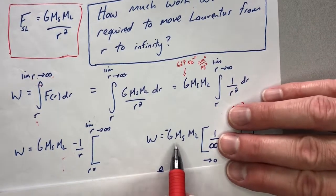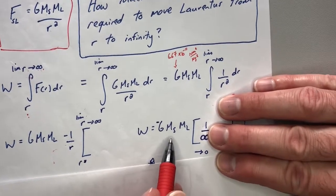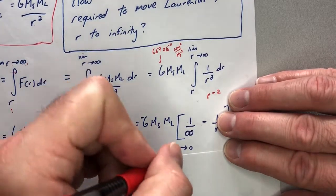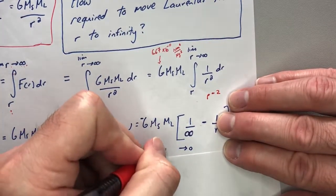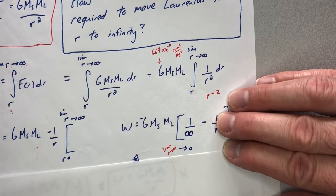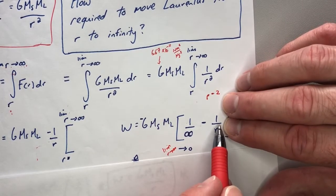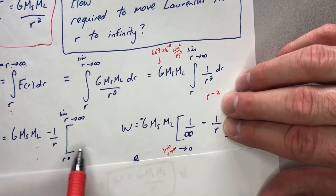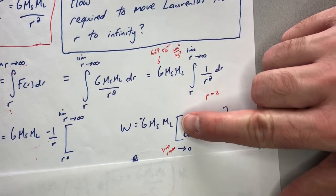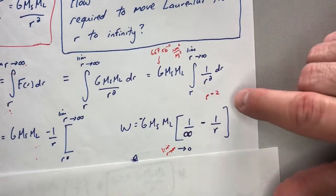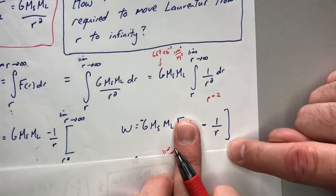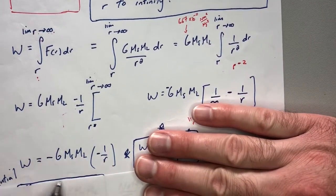Evaluating from r to r as it approaches infinity, I get: negative G times mass of sun times mass of Laurentiis, in brackets — 1 over infinity minus 1 over r. My calculus teacher always insisted it's really the limit as r goes toward infinity. Now, 1 over a really big number is essentially 0, so that term goes away. You're left with negative G times mass of sun times mass of Laurentiis times negative 1 over r.